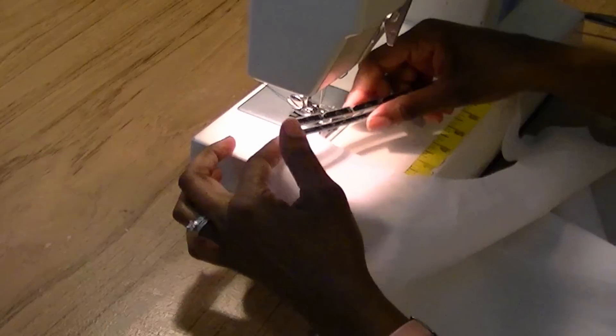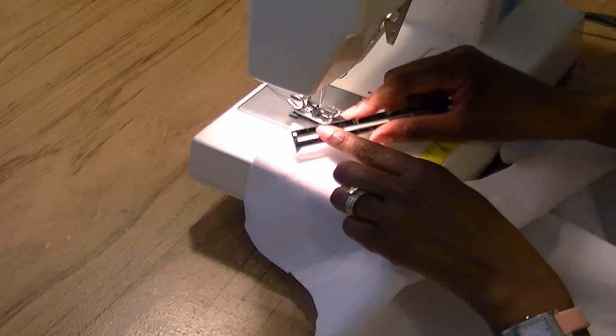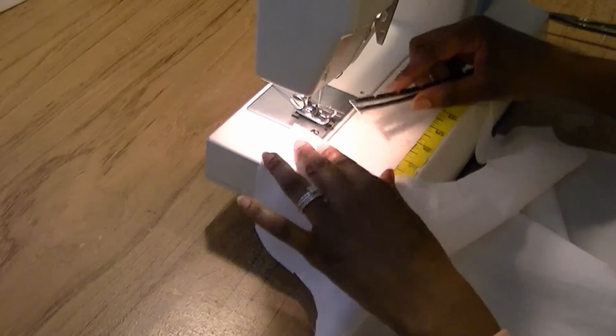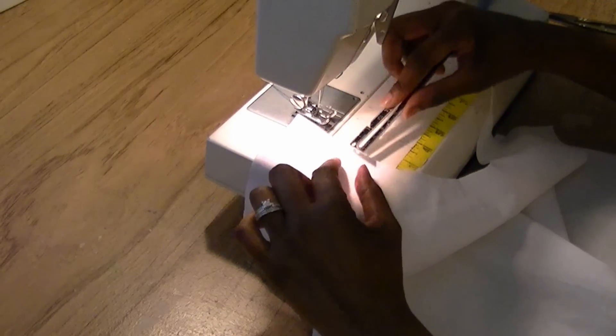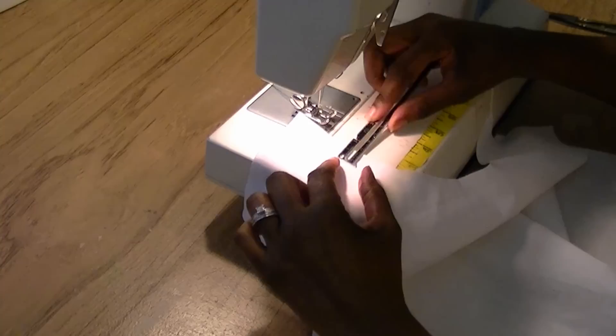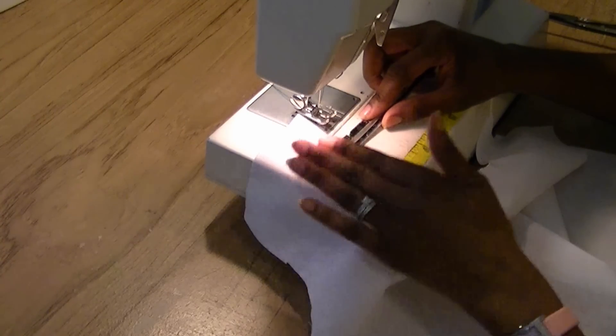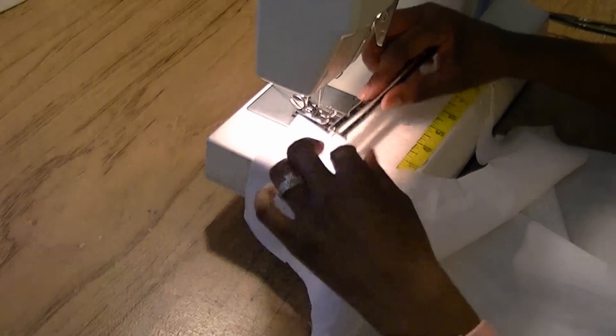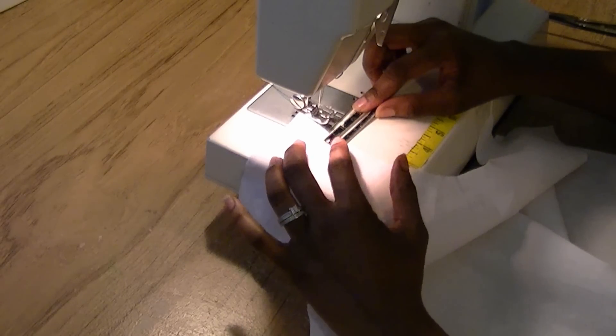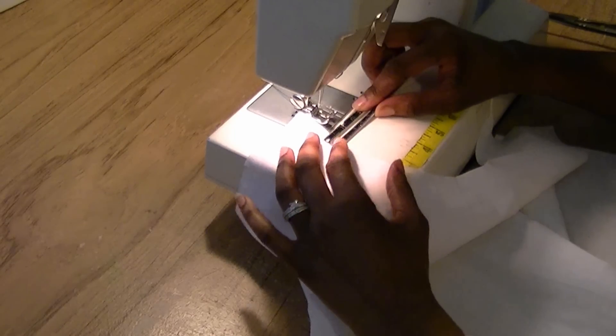Generally in sewing you would sew a 5 eighths inch seam allowance, but when you're doing a stay stitch you want to stitch just inside of your stitching line because you don't want the stay stitch to show because the stay stitch is pretty much permanent. So normally a stay stitch is anywhere from 3 eighths to a half of an inch.